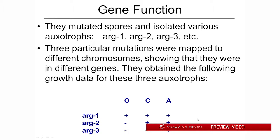What they did was mutate spores of Neurospora and isolate various auxotrophic mutants. An auxotroph is an organism that is not able to synthesize a vital nutritional compound that the wild type can — it has to be supplemented in order to grow. The opposite of an auxotroph is a prototroph, which can make everything it needs to grow before being supplemented. They started collecting mutants that could not make arginine after being mutated, cataloging them as arg-minus.